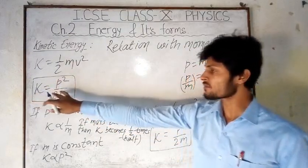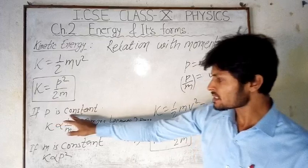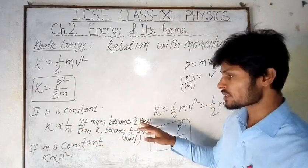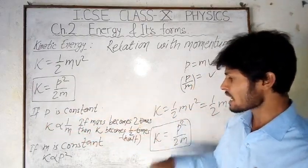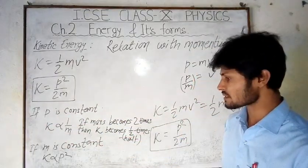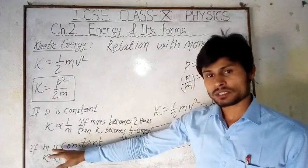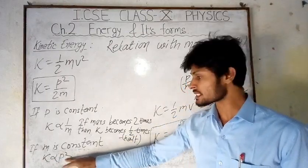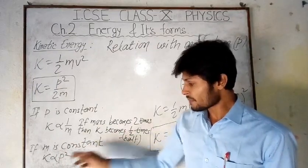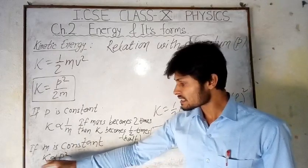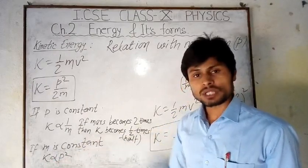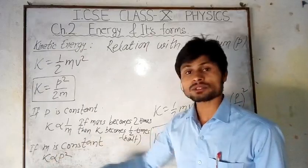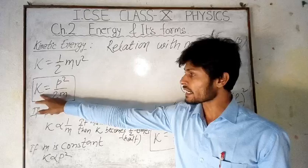From the expression K = p²/2m: if momentum is constant, K is inversely proportional to mass — if mass becomes two times, kinetic energy becomes half. When mass is constant, K is directly proportional to p² — if p becomes two times, K becomes four times; if p becomes three times, K becomes nine times. This is how kinetic energy relates to momentum.